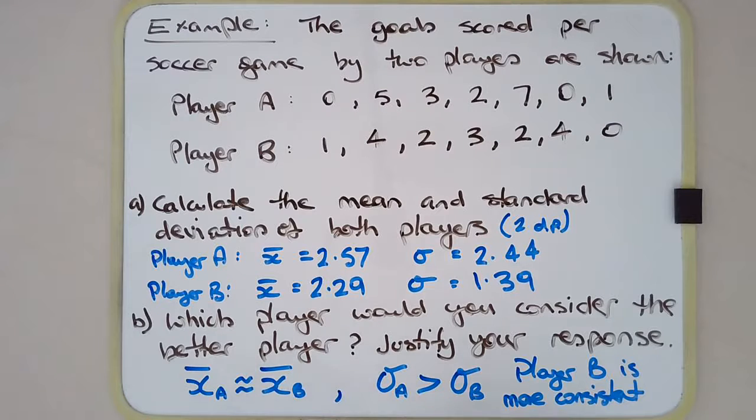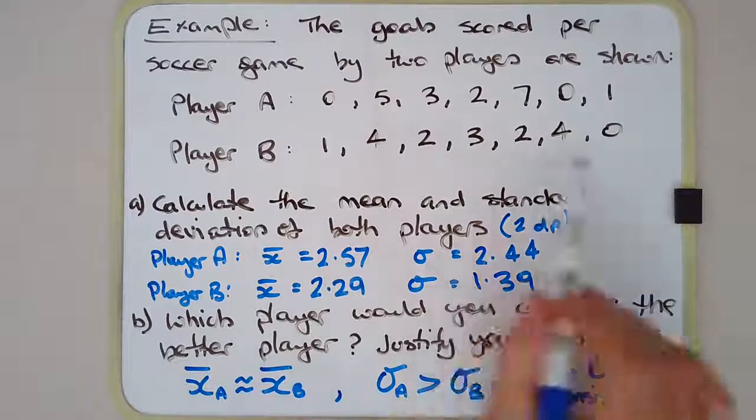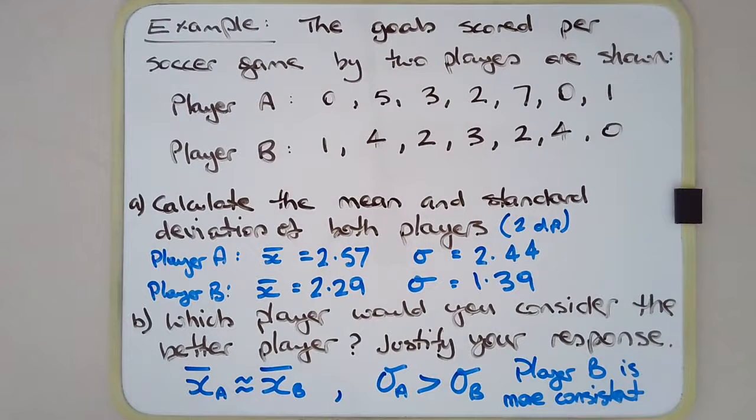But the standard deviation of A is significantly larger than the standard deviation of Player B, which indicates that Player B is definitely more consistent. And observedly, you can observe the consistency—that's big enough of a difference that you can tell, you can even tell from the scores as well.